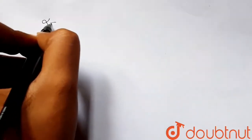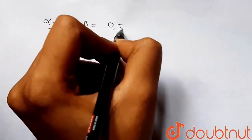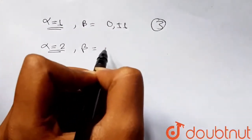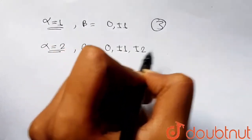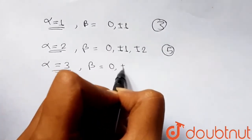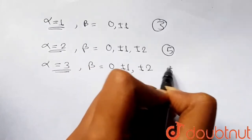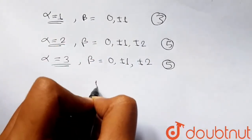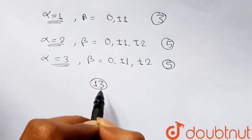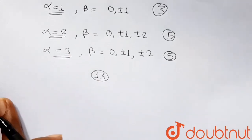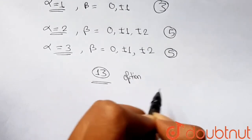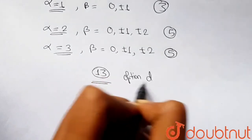So when α = 1, we got 3 values of β: 0, ±1. When α = 2, we got 5 values: 0, ±1, ±2. When α = 3, we again got 5 values: 0, ±1, ±2. In total, we got 5 + 5 + 3 = 13 points which lie inside both the parabola and the circle. So 13 is our answer. Among the given options, none matches 13, so our answer is option D — none of these.